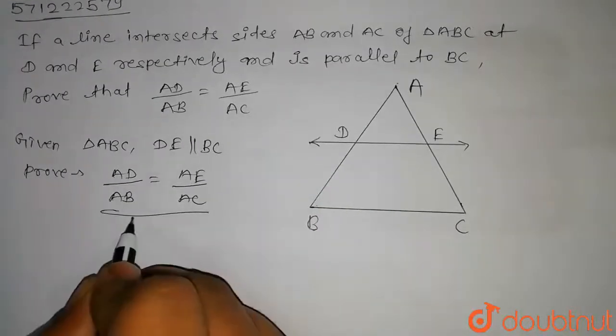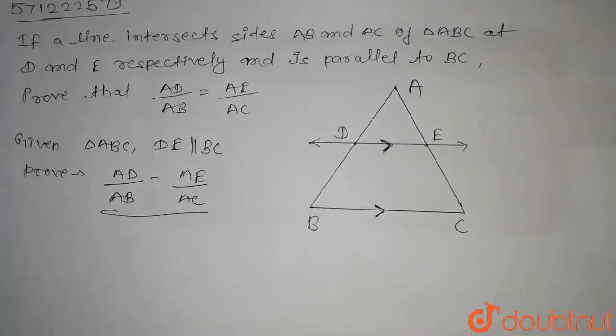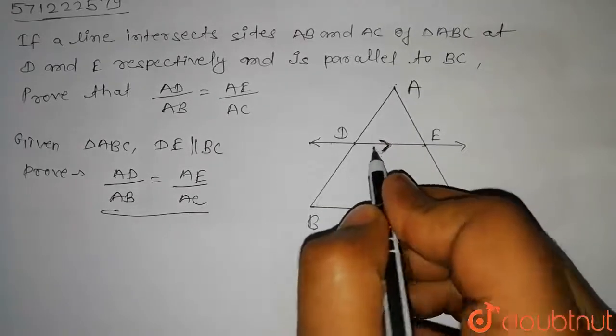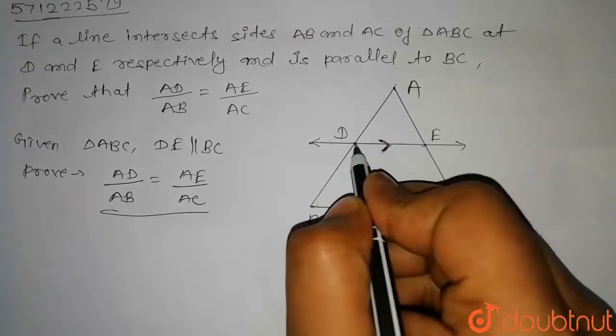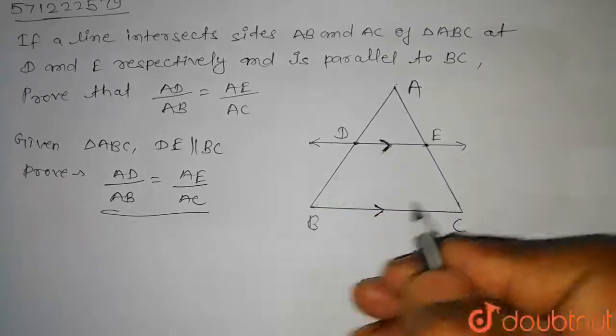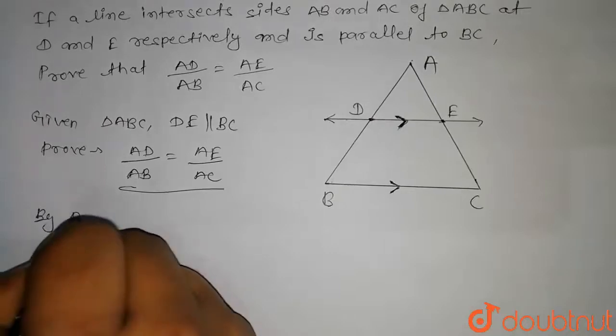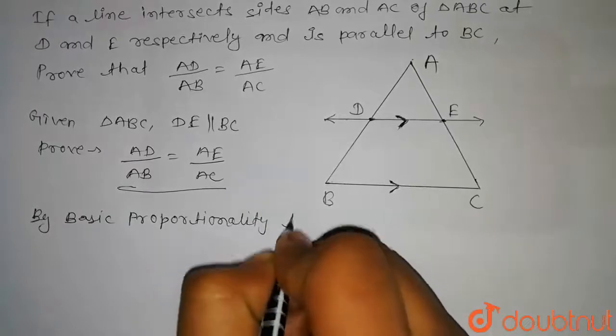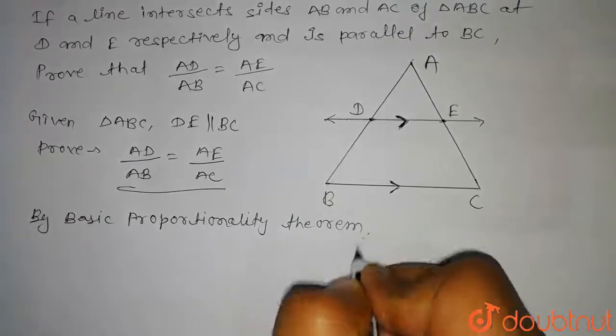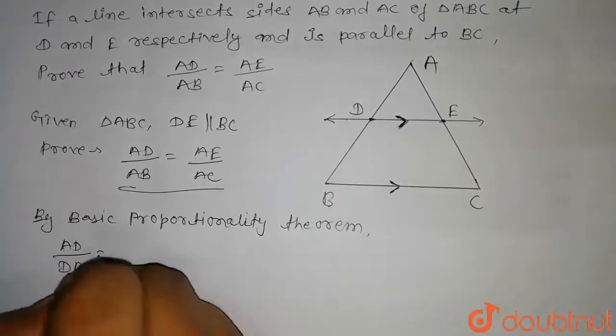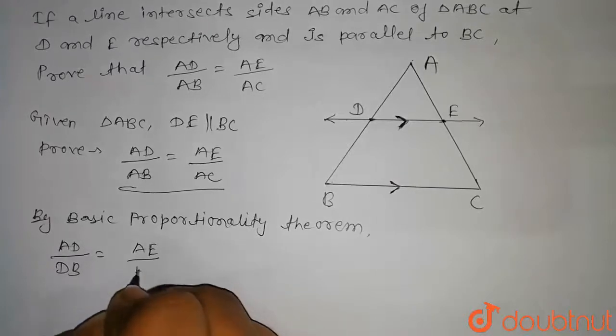So let us start to prove this. Now according to basic proportionality theorem, we know that if a line is drawn parallel to one side of the triangle, then the line which is drawn parallel to one side of the triangle intersecting the other two sides in two distinct points will divide the other two sides in the same ratio. So by basic proportionality theorem,